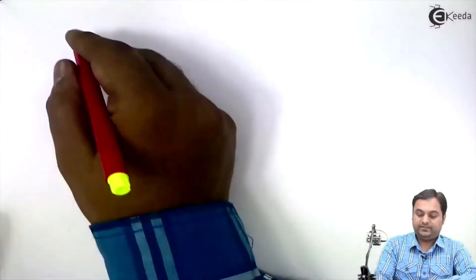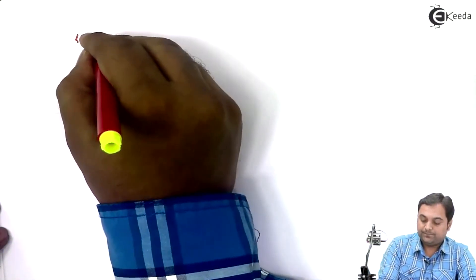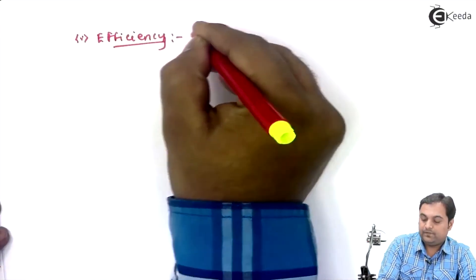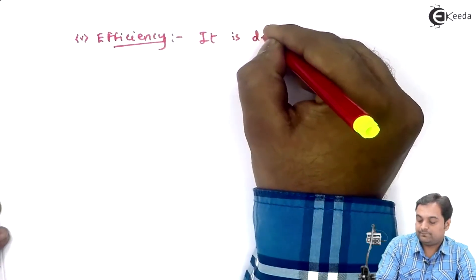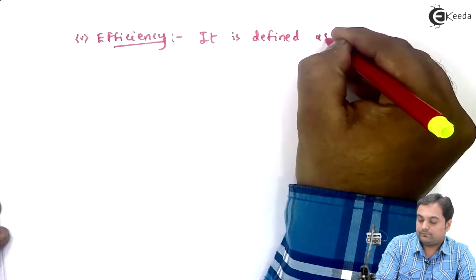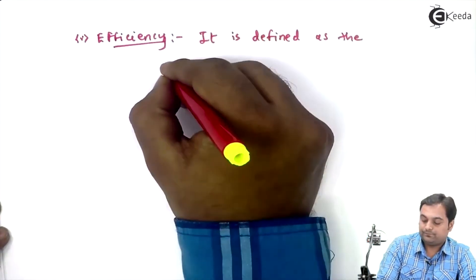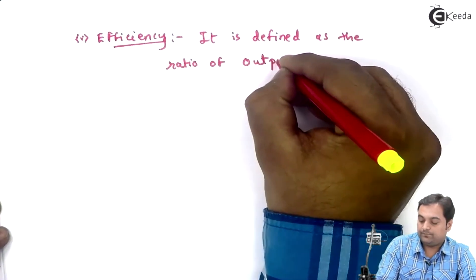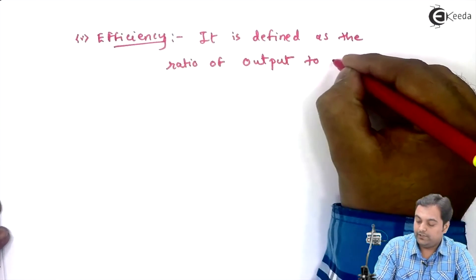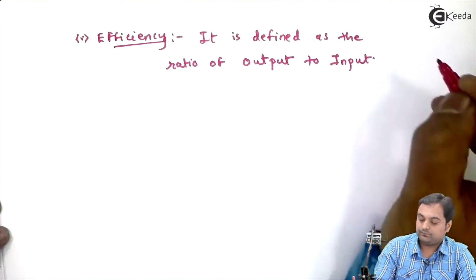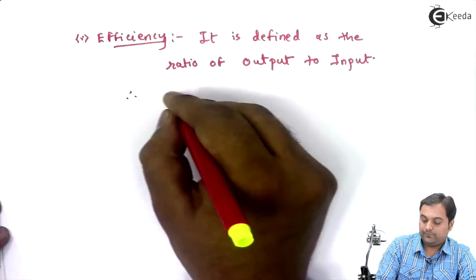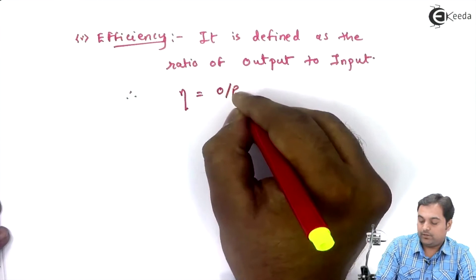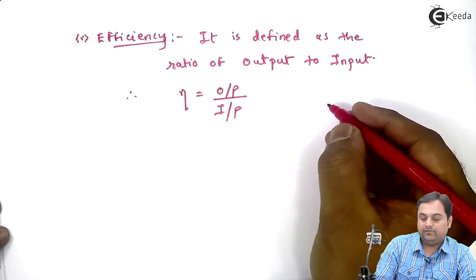After input and output, the next definition is efficiency. Efficiency is defined as the ratio of output to input. Therefore, efficiency — denoted by eta (η) — is equal to output upon input.